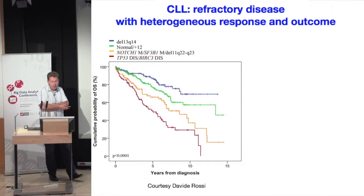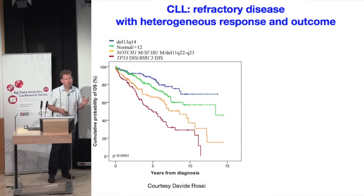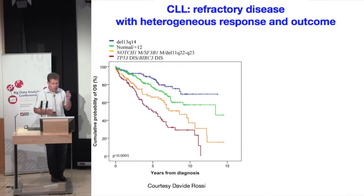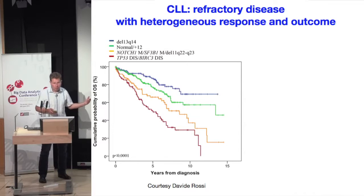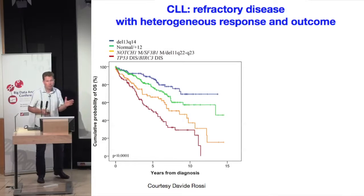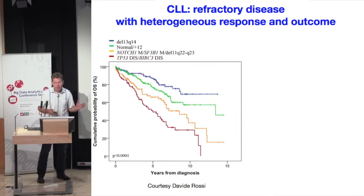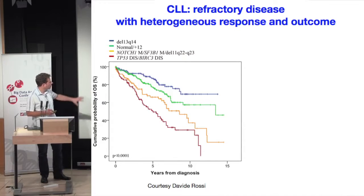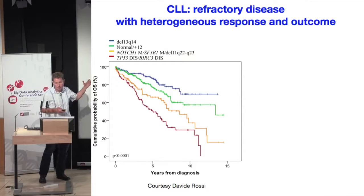The starting point is the observation in CLL, which is the most prevalent adult leukemia. It's a very refractory disease with a heterogeneous response and outcome. Over the last decades, from microarrays, copy number arrays, and genome sequencing, we have assembled quite a good body of knowledge about the molecular alterations in this disease. For instance, the recent stratification of the disease by David Rossi is shown here.